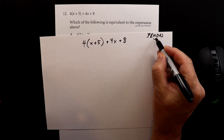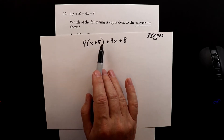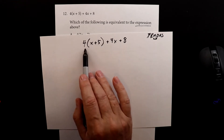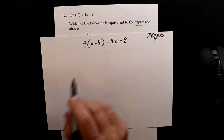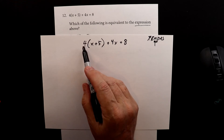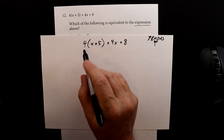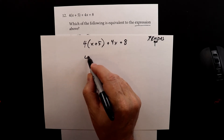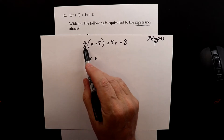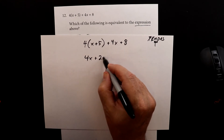Multiplication and division get grouped together and can go back and forth. There is no division in here, but when you have a number before the parentheses, that is multiplication — so we do have that. We need to distribute this 4 to the x and the 5 and multiply. 4 times x is 4x, plus 4 times positive 5 is 20.